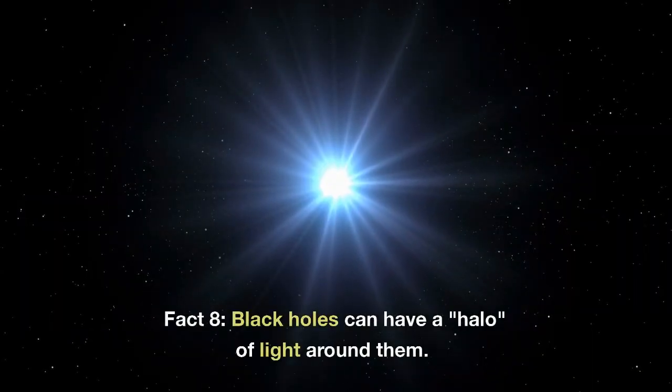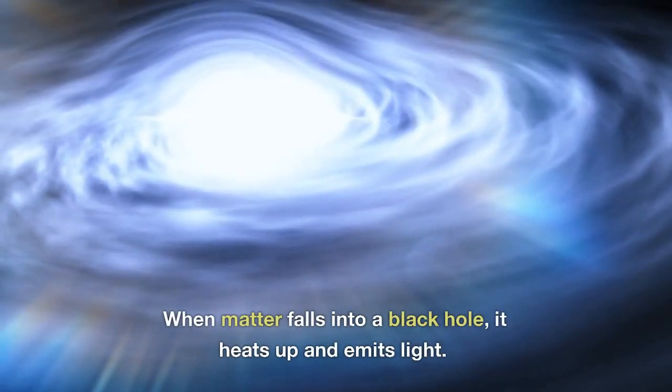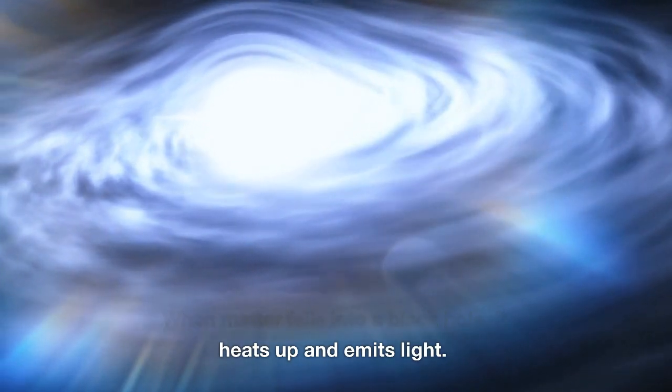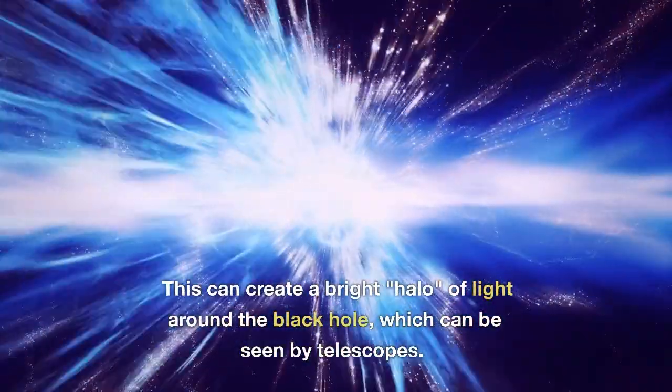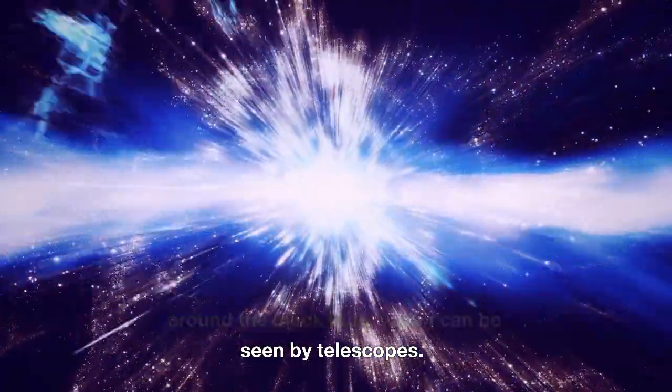Fact 8. Black holes can have a halo of light around them. When matter falls into a black hole, it heats up and emits light. This can create a bright halo of light around the black hole, which can be seen by telescopes.